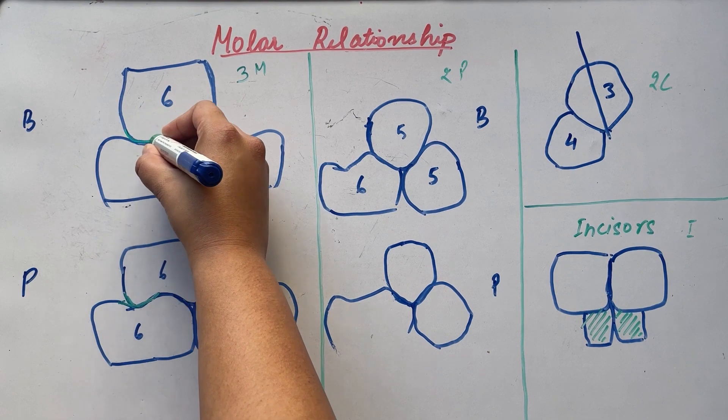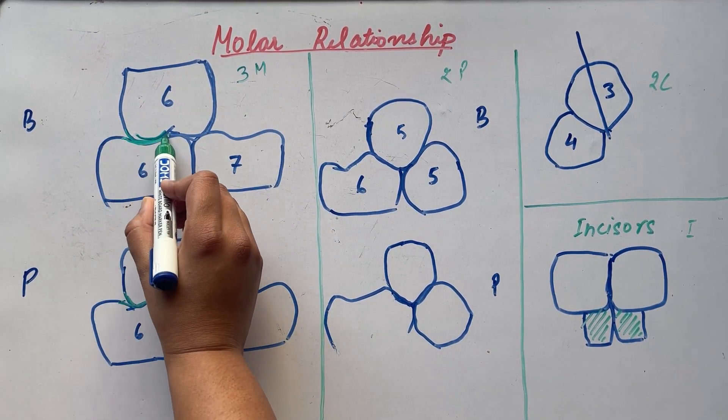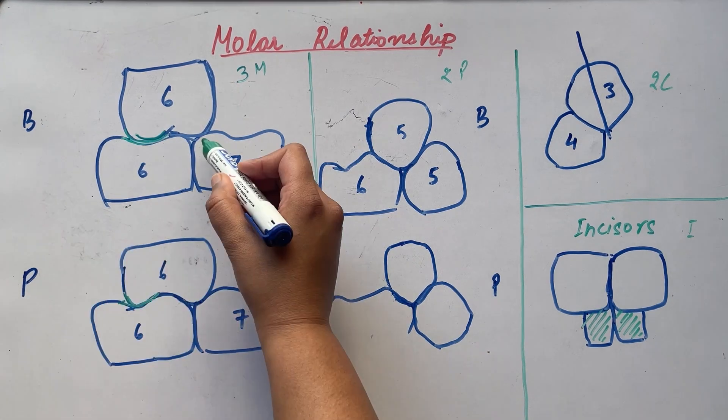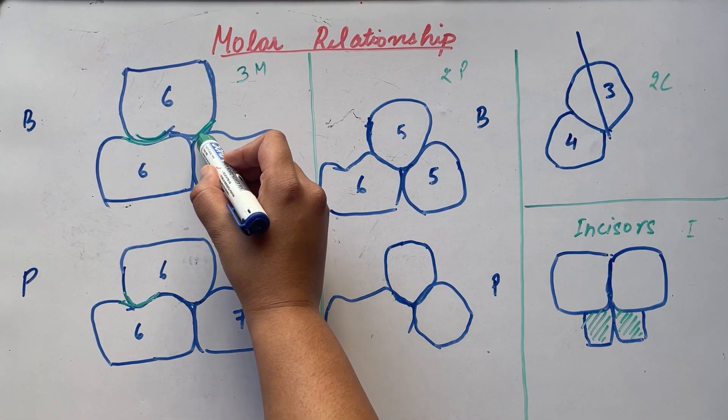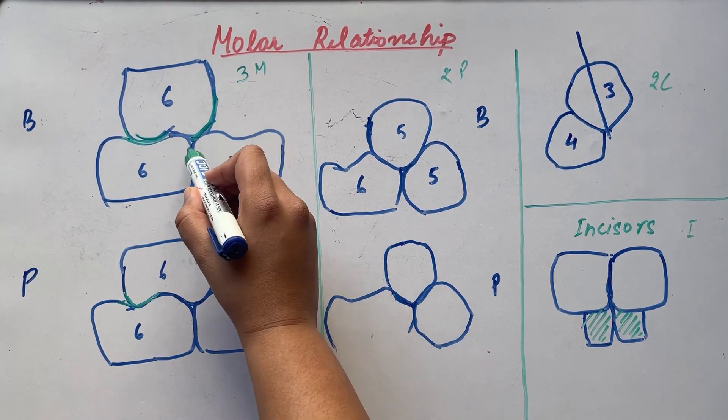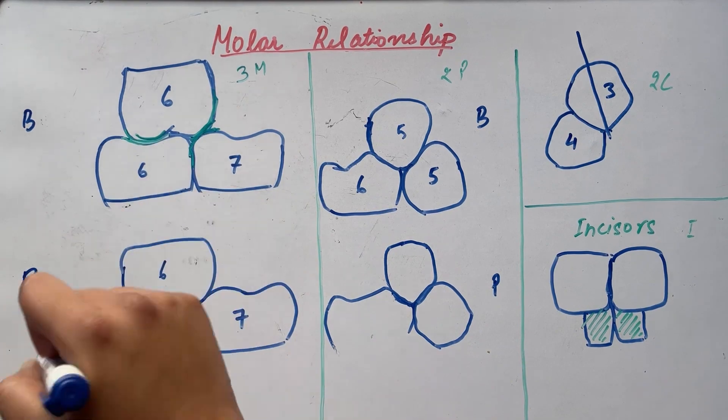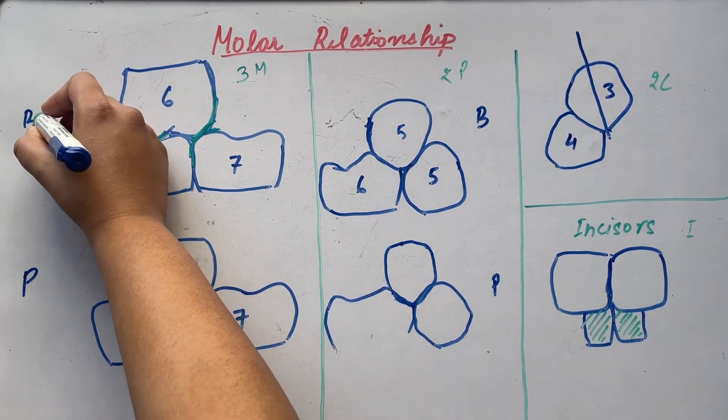1. Mesiobuccal cusp of the maxillary first molar falls in the buccal groove of the mandibular first molar. 2. The distal marginal ridge of the maxillary first molar occludes with the mesial marginal ridge of the mandibular second molar. These 2 points were on the buccal side.